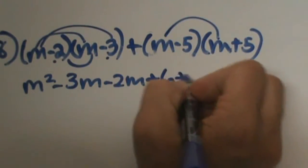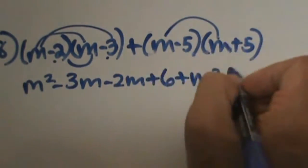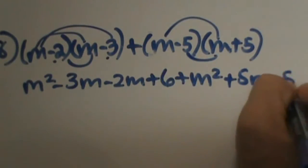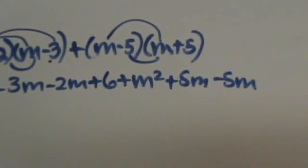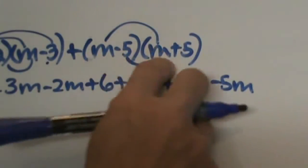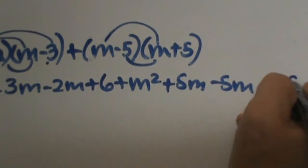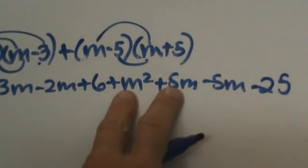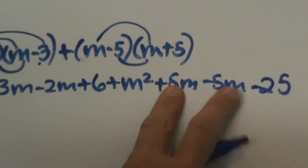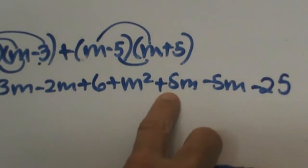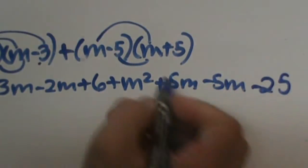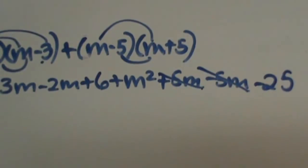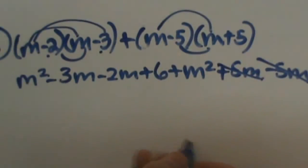Now let's FOIL the second part: m times m is m squared, outer is plus 5m, inner is minus 5m, and then minus 25. Before we simplify, notice these two terms — positive 5m and negative 5m — they are just going to become zero, so they cancel each other out.